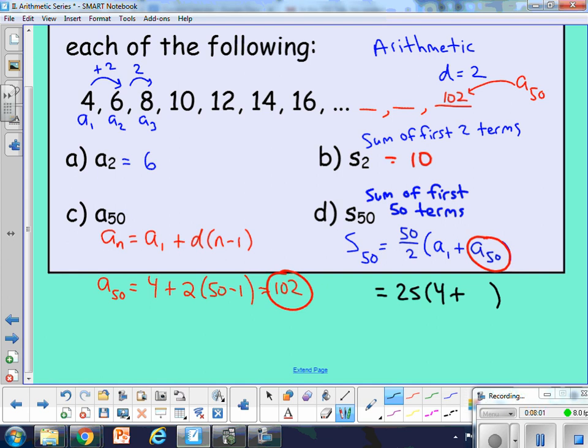50th term we found previously to be 102. So this thing should add up and get us a final sum of, if you calculate that, 2,650. So that would be the value of adding up the first 50 terms of the given sequence.